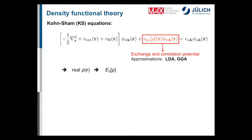Since we have the total density of the interacting system, we can plug it into density functionals to calculate ground-state observables: total energy, forces for structural relaxation, magnetic moments, and so on. However, this approach is limited to the ground-state total density — we can only calculate ground-state properties.